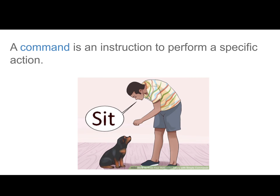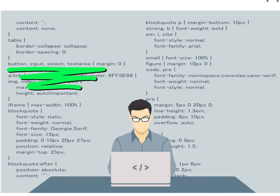A command is an instruction to perform a specific action. Check out this example — the boy is telling the dog to sit. That is a command. Developers use commands too. They command the program or game to do something.